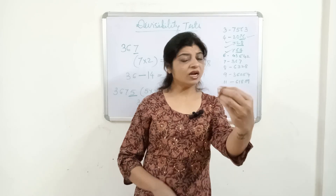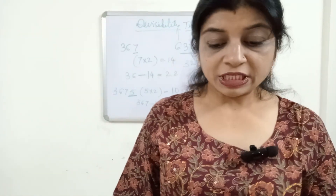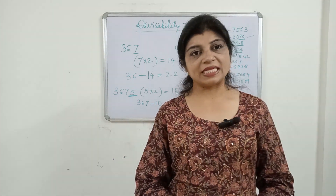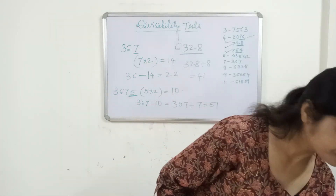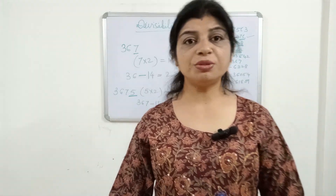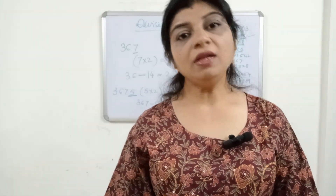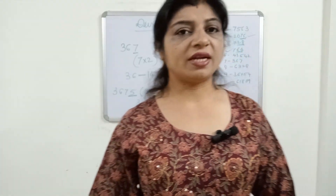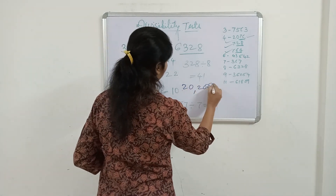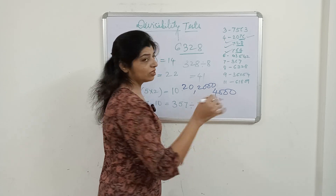Divisibility of 10 is the simplest. A number whose ones place has zero is always divisible by 10. For example, numbers like 20, 2000, 4000, 22000, 40000 — all these are divisible by 10.